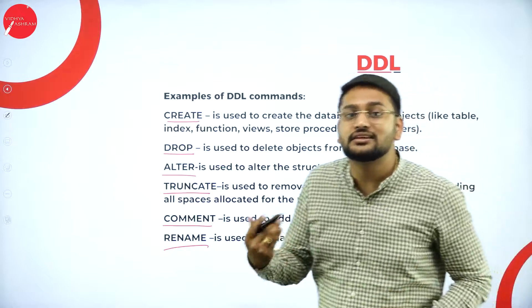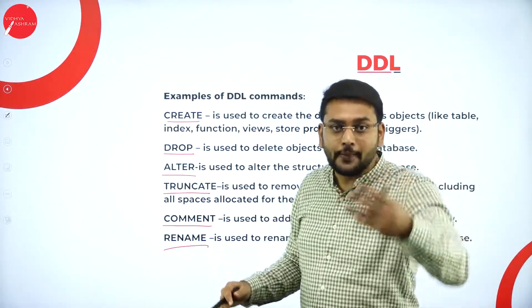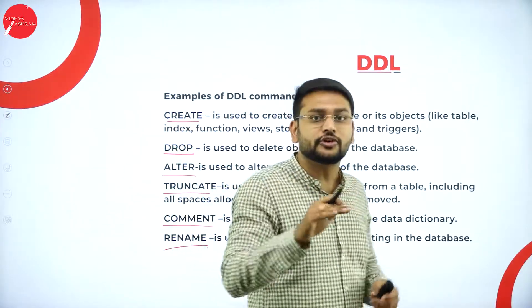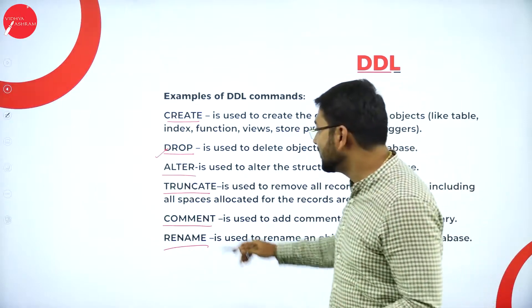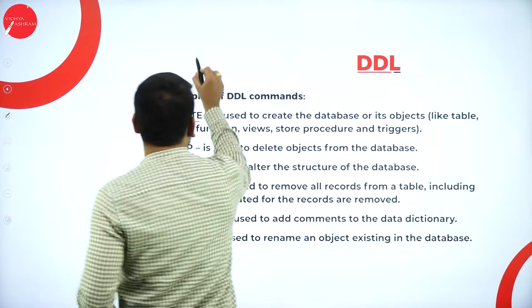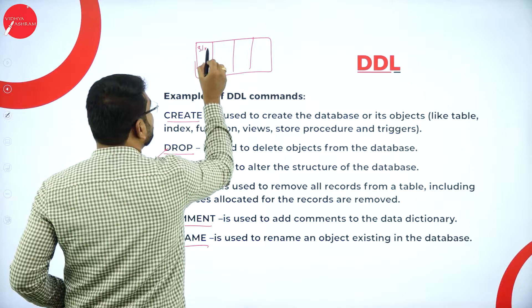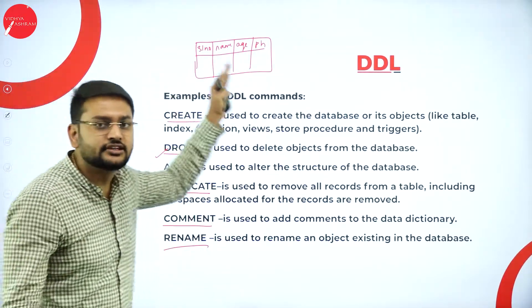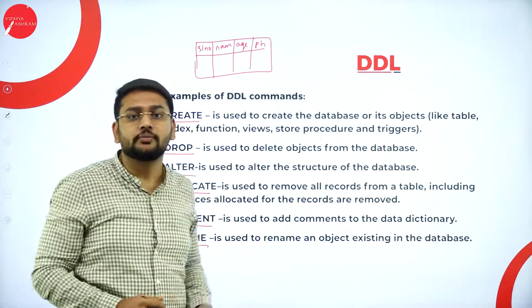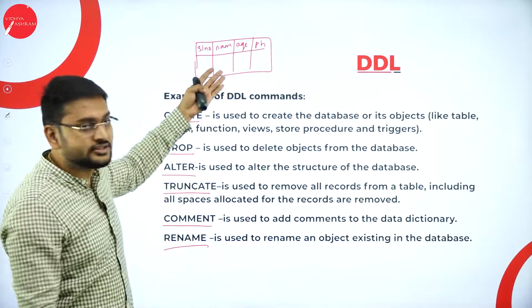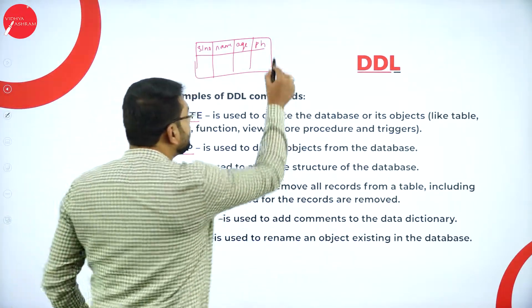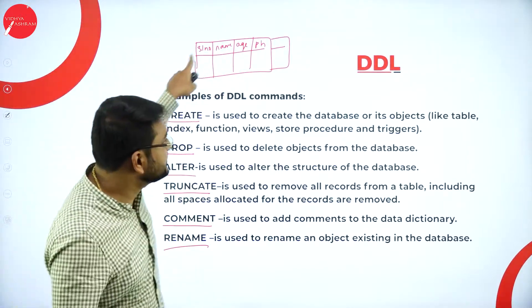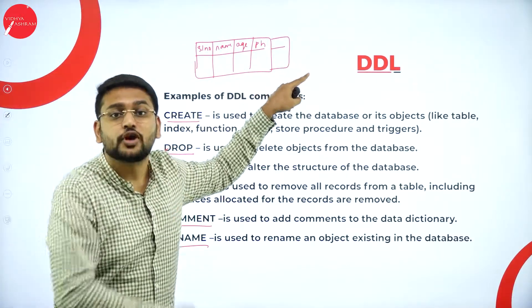CREATE TABLE helps you to create a table. DROP removes the entire structure or schema of the table from the database. ALTER is used when, for example, you have already created a table with serial number, name, age, and phone number, inserted 50 records, and then realize you need to add one more column called address — ALTER allows you to modify the schema of the table.